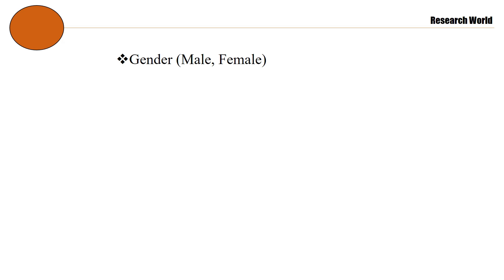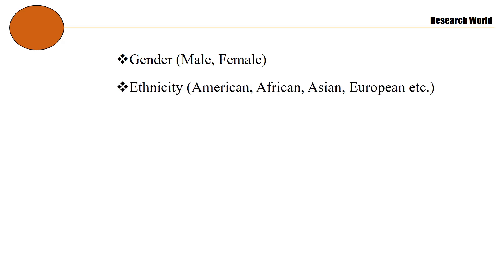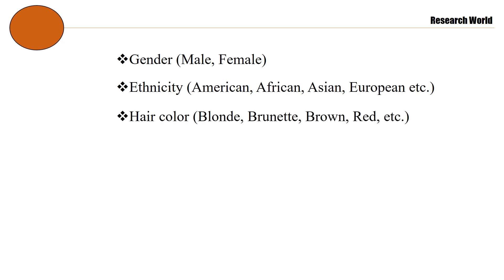Examples of categorical variables include: gender — male, female; ethnicity — American, African, Asian, European, etc.; and hair color — blonde, brunette, brown, red, etc.